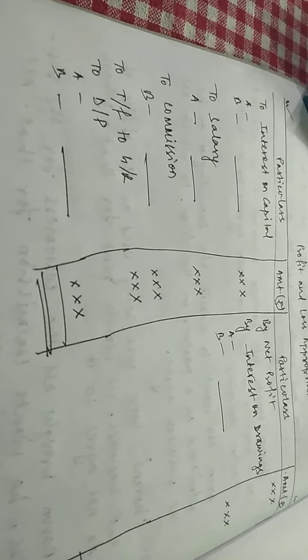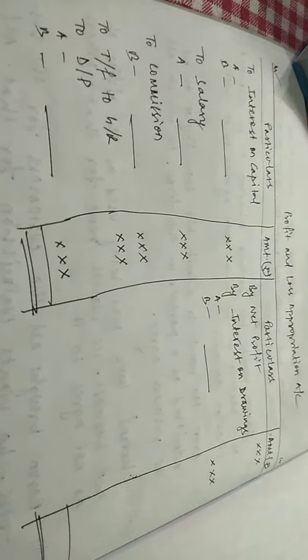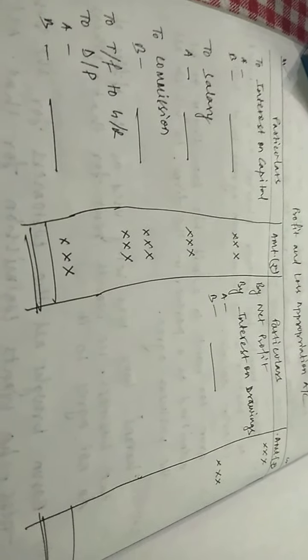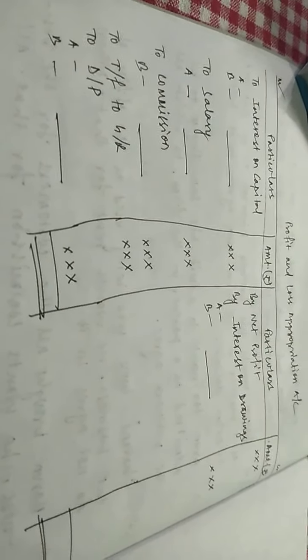I hope it is clear to all of you. The items that appear on the debit side are: interest on capital, salary, commission, and transfer to general reserve. Why are these items appearing on the debit side? Why are net profit and interest on drawings on the credit side? The simple reason is — as we learnt in Class 11 — all expenses are debit and incomes are credit. Now, profit and loss appropriation account is being made by the partnership firm, not by the partners.